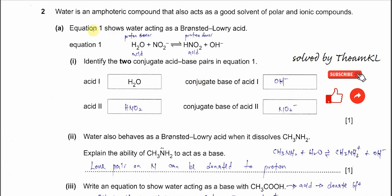Question 2, Part A. Equation 1 shows water acting as a Bronsted-Lowry acid. The H2O is a proton donor, donates one proton to the nitrite ion to form HNO2, the nitrous acid, and hydroxide.